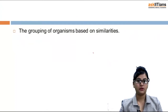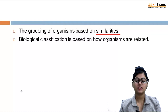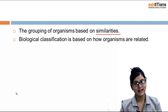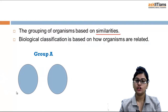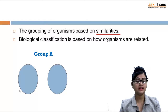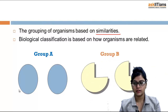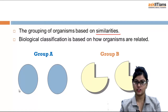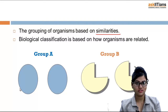The grouping of organisms is based on similarities, and biological classification is based on how organisms are related to each other. For example, Group A is having two circles of same color and same size — everything is the same, so they are placed in Group A. In Group B, the shapes are similar and look related to each other, so they are kept in Group B. One more important thing: biological classification is not completely based on outer appearance; it is based on characteristic features as well.